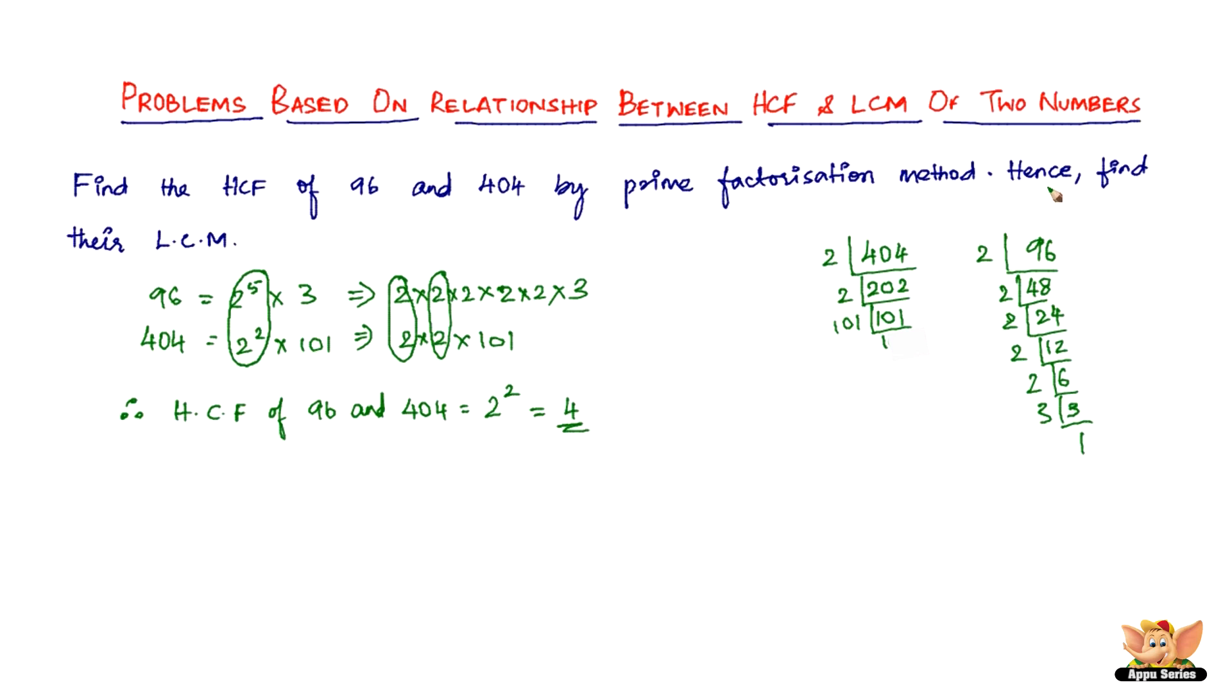Now that we found the HCF, they're saying hence find the LCM. So we know the relationship between the HCF and LCM, right? The product of the two numbers, let the two numbers be a and b, so a times b equals HCF times the LCM.